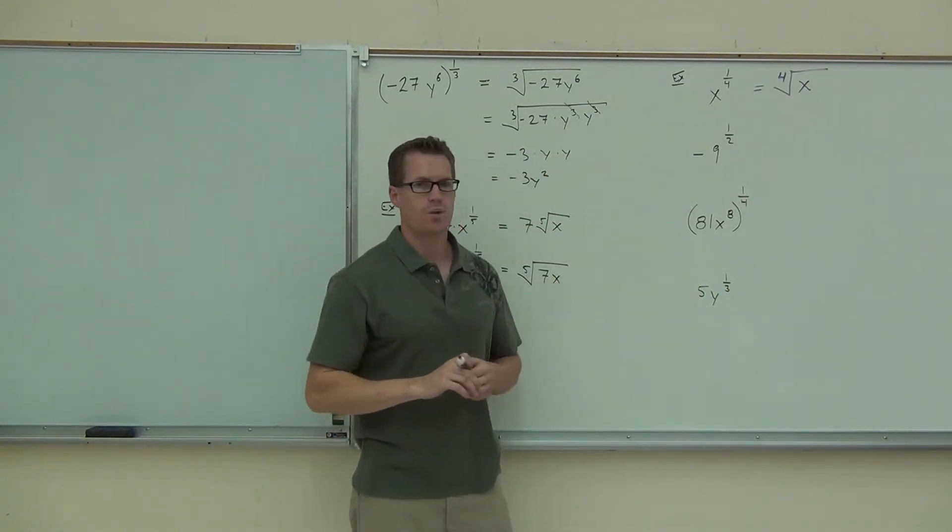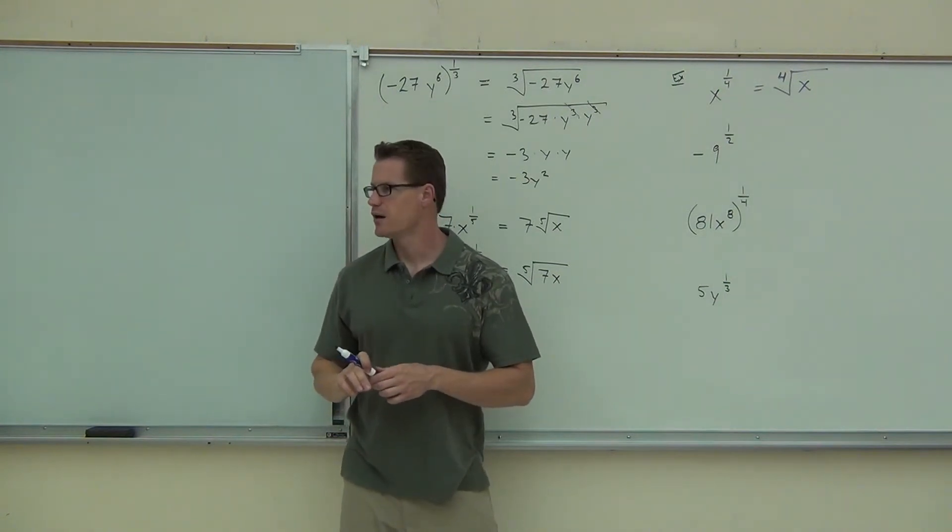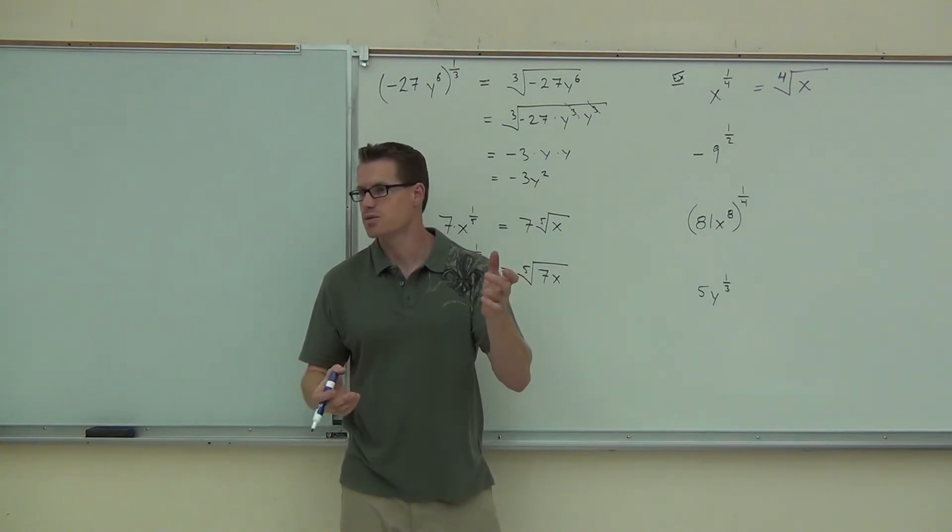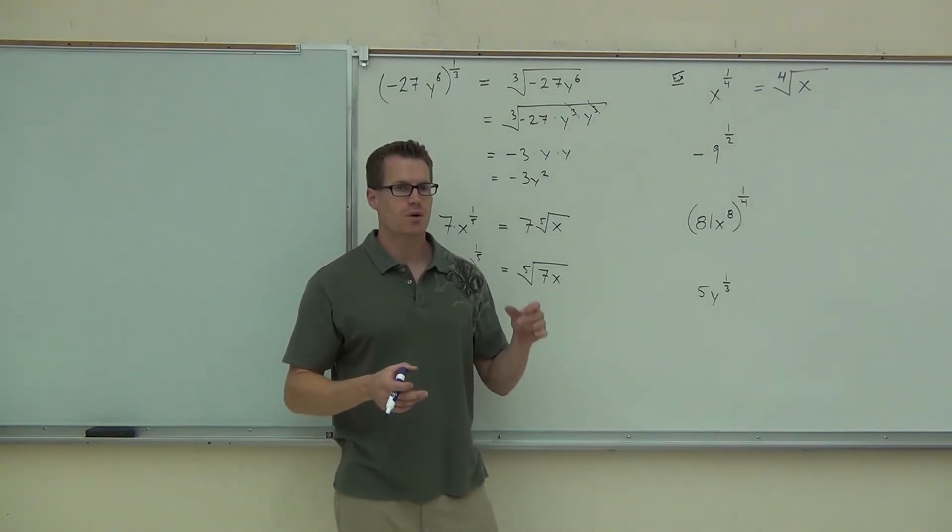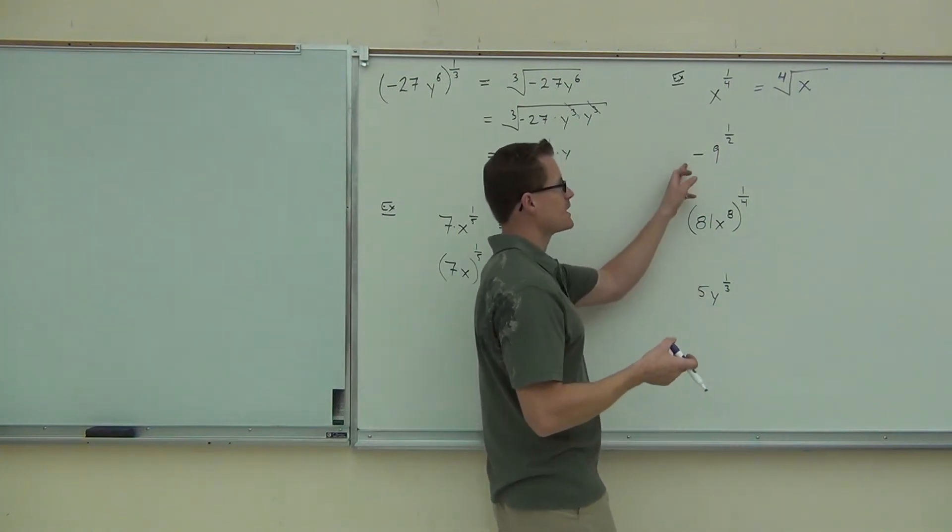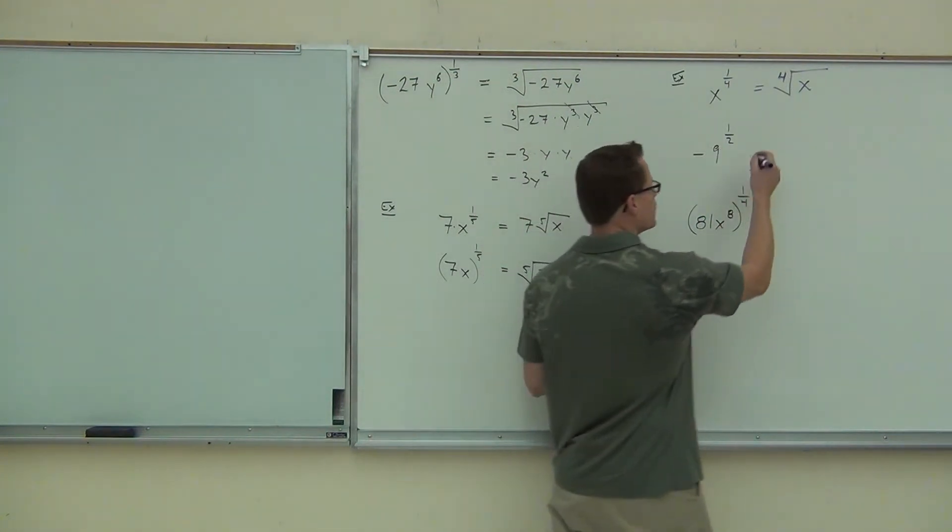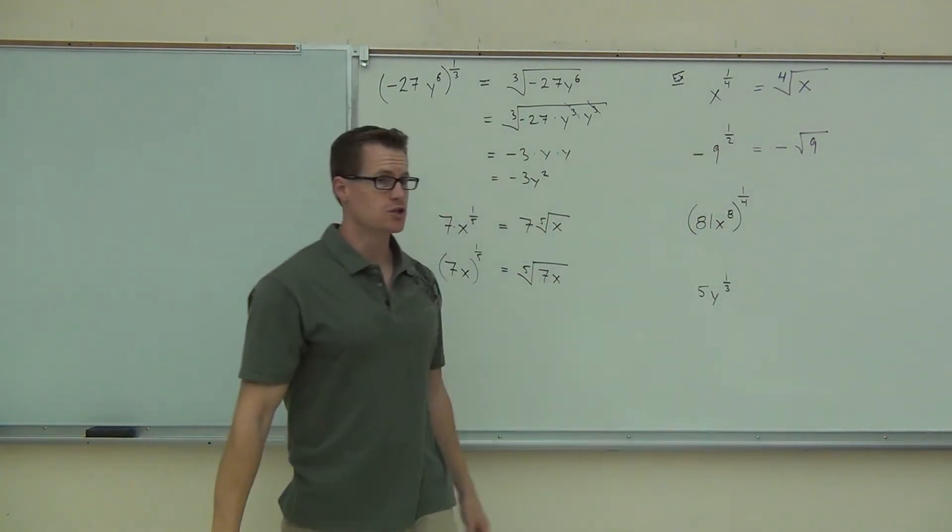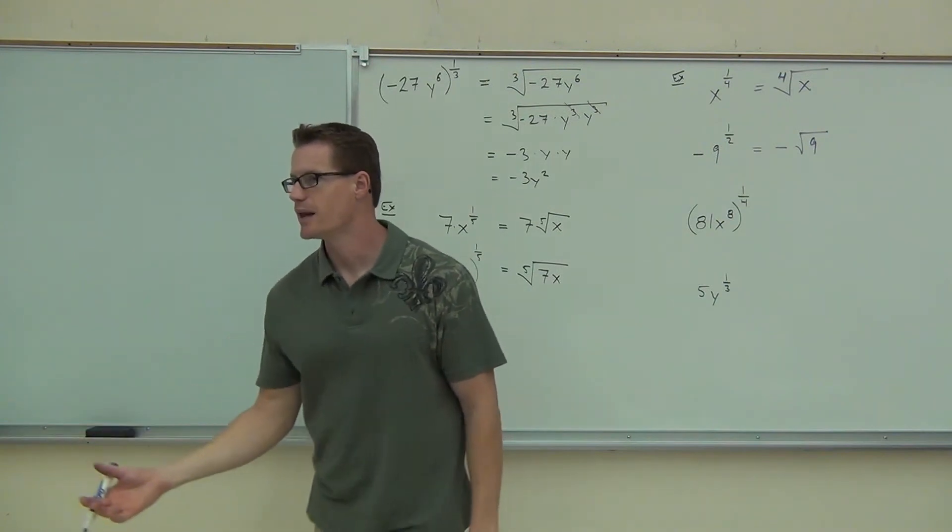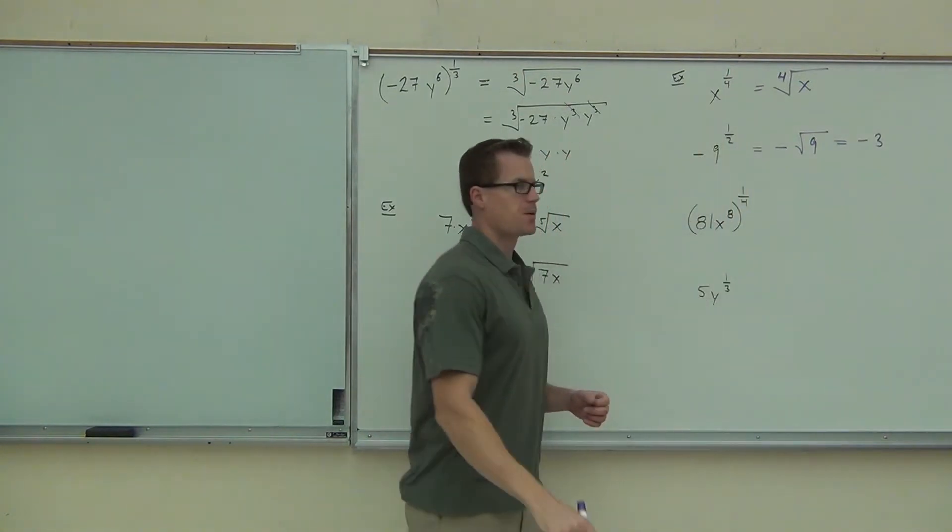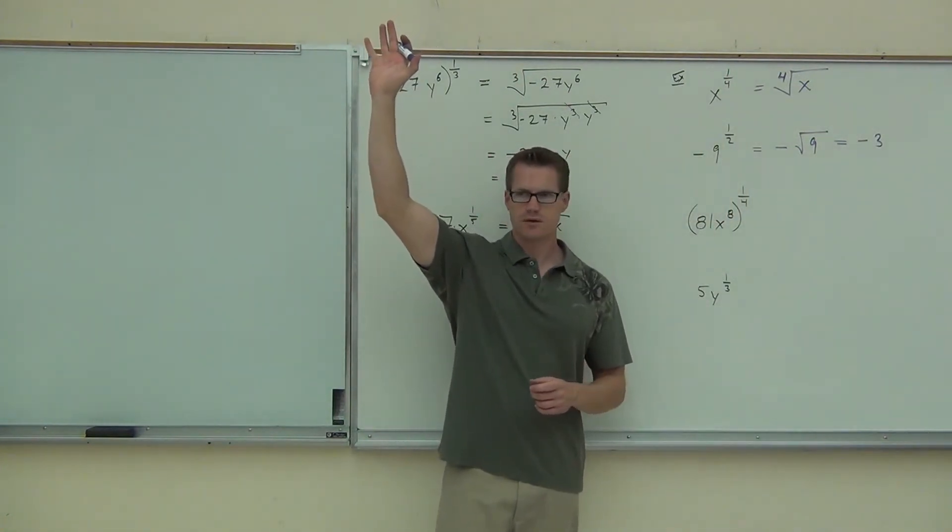Next one, we've got negative nine to the one-half. What type of root do we have? Square root. So I'm just going to write the radical without any indices because that implies a square root. One question, is the negative going to go on the inside of our square root or the outside? Outside. So this is very much like saying this is negative one times nine to the one-half. So in other words, it's negative square root of nine. We can do the negative square root of nine. How much is that? Negative three. How many people are two for two so far? Good for you.